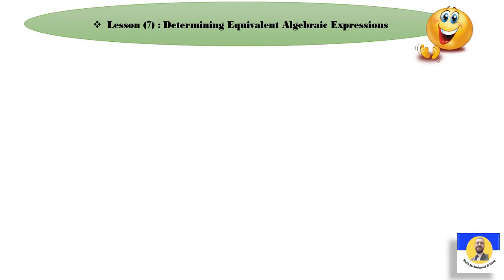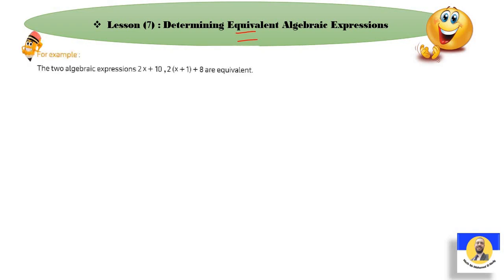We want to add something called Equivalent Algebraic Expressions. Equivalent means equal. We need to know how to identify equivalent algebraic expressions — for example, expressions like X+3, X+2, Y−5. Equivalent means equal to two expressions. For example, 2X+10 and 2X+1+8 — how can we know if they are equivalent?